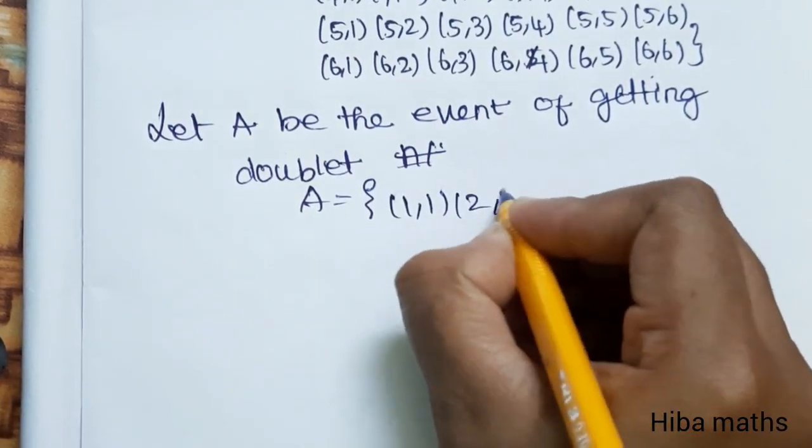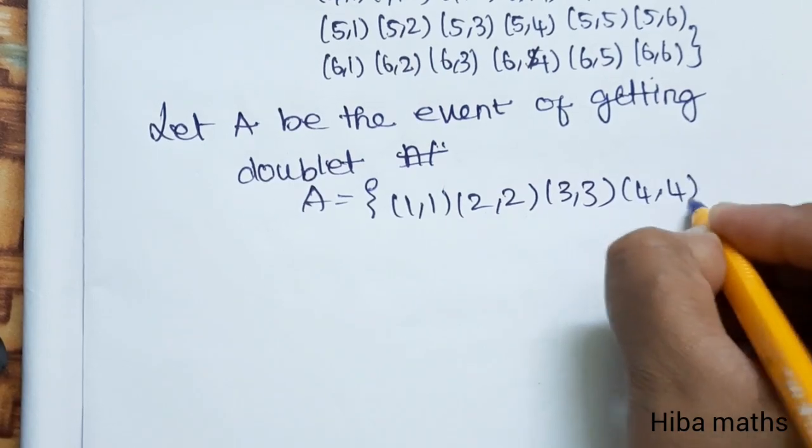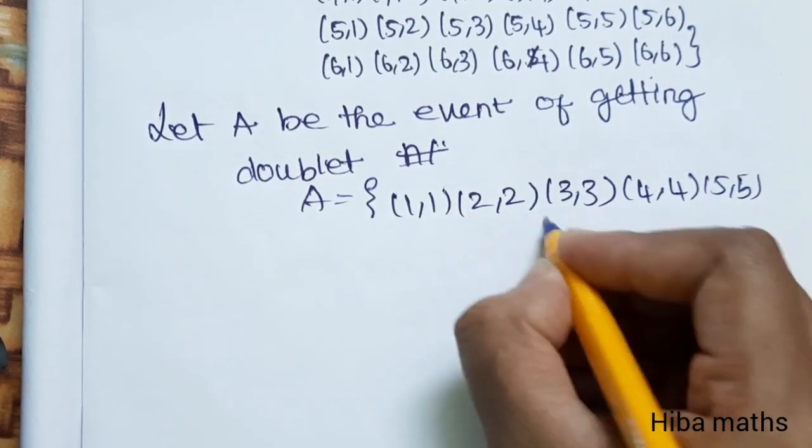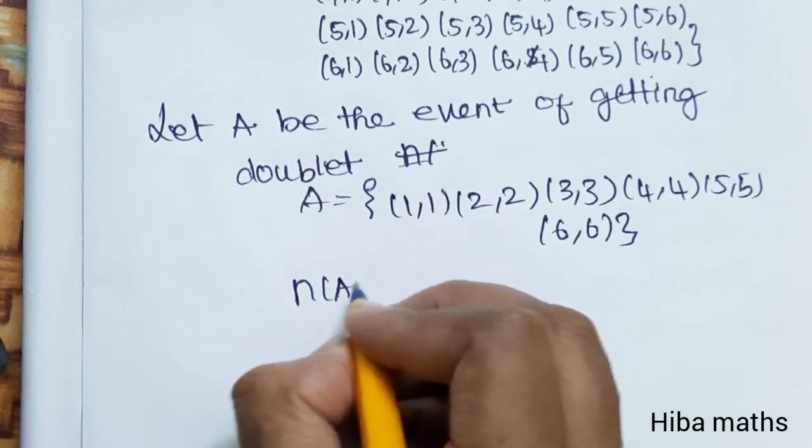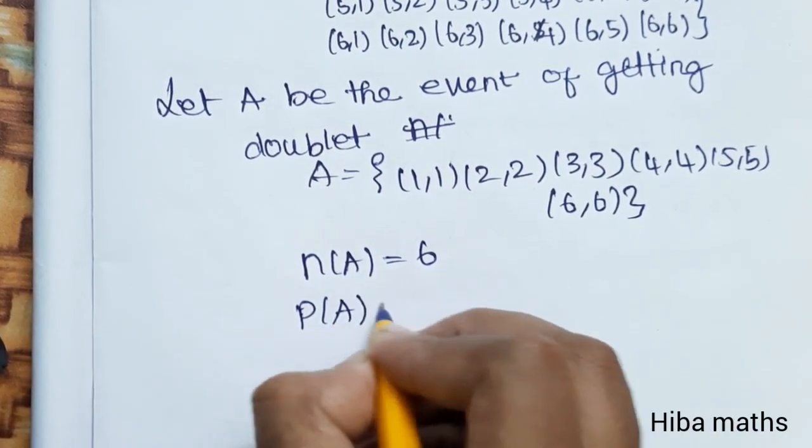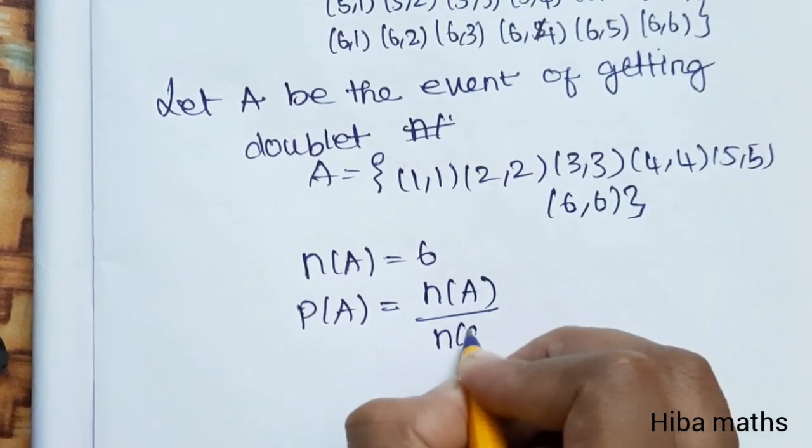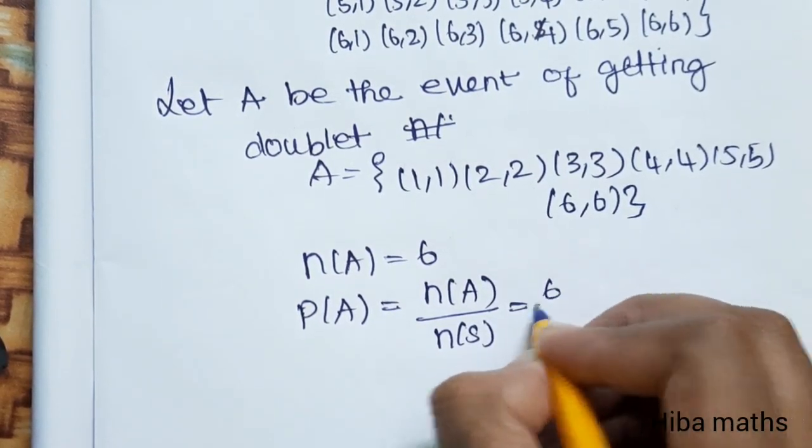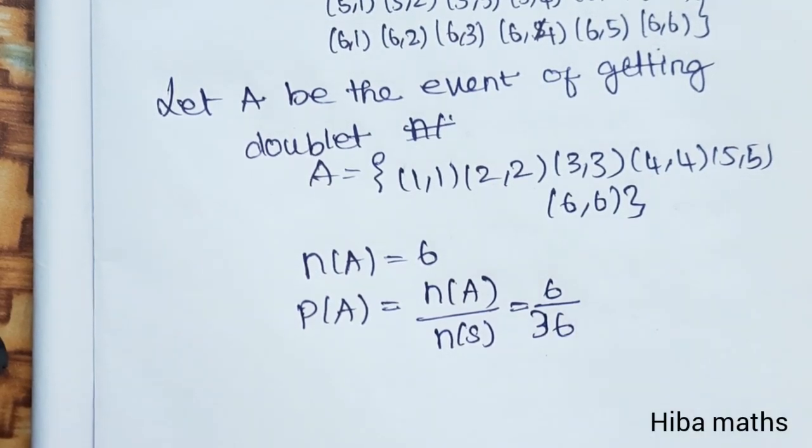Writing the doublets: 1,1, 2,2, 3,3, 4,4, 5,5, 6,6. N of A total is 6. Then P of A is equal to N of A by N of S. N of A is equal to 6, N of S is equal to 36. After canceling, P of A equals 1/6.